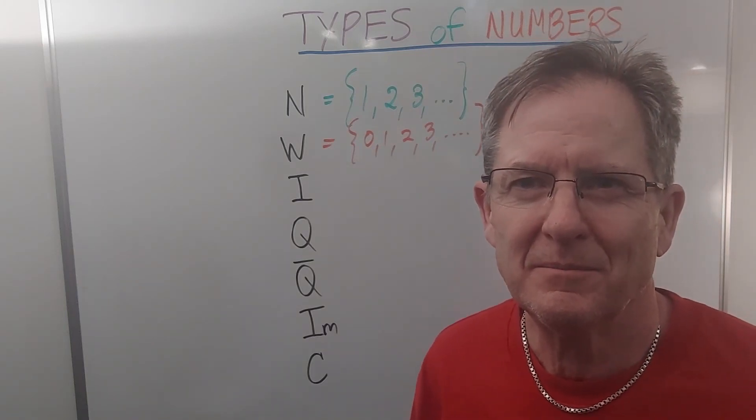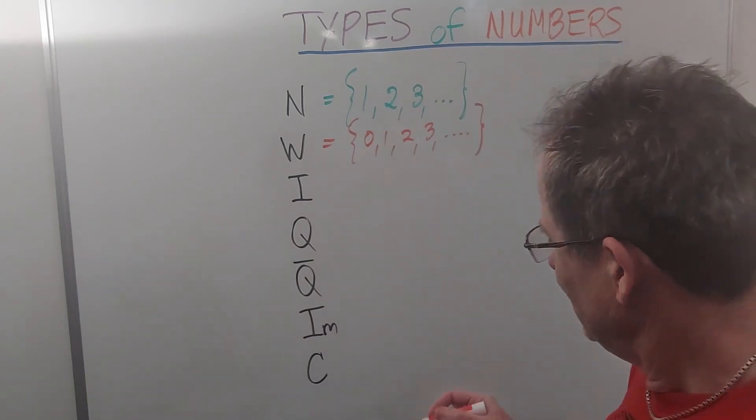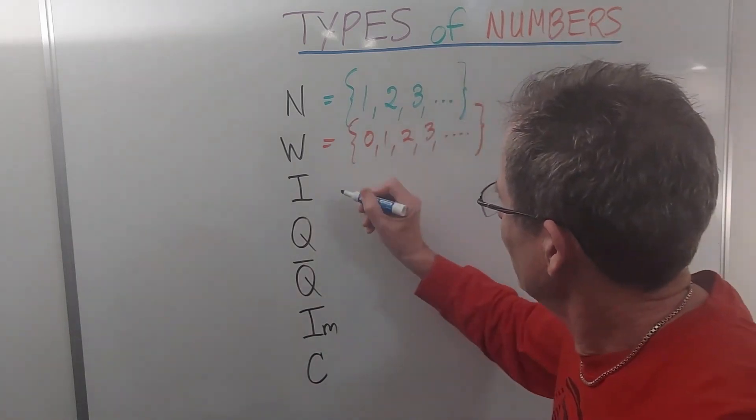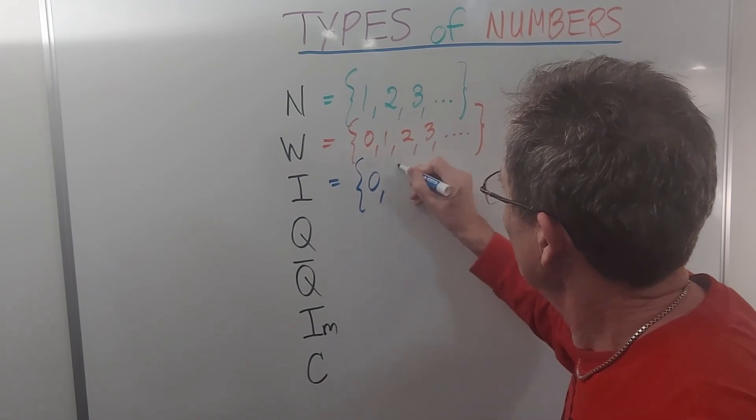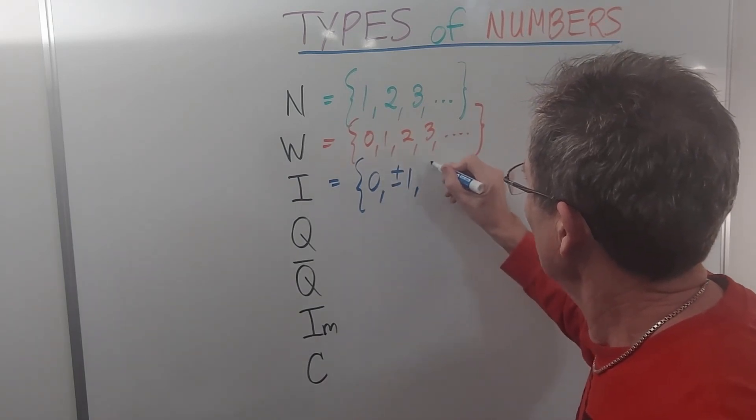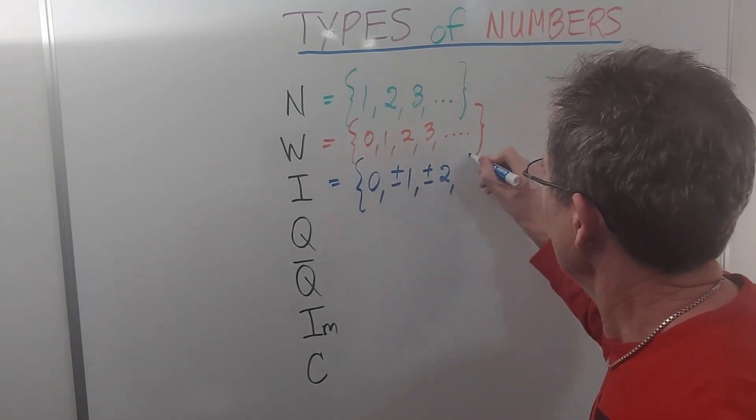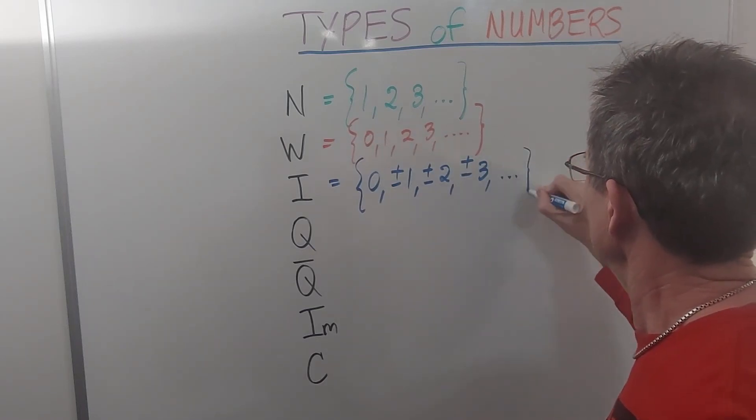The integers, represented by the letter I, include 0 and the positive and negative whole numbers to infinity.